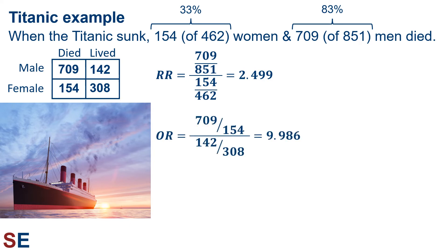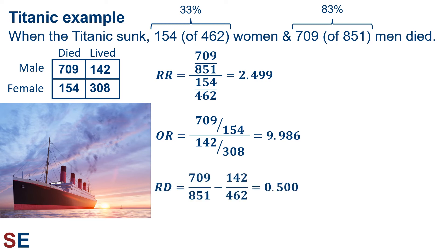The odds ratio is calculated and we get a value of 9.986. It says that the ratio of males to females was almost 10 times higher in the group that died than in the group that lived. This is a nice example of how the odds ratio can mislead us — it does not mean that men were 10 times more likely to die; that value was 2.5. The difference between these two values is so large because the focal outcome was not rare; more than half of all individuals experienced the focal outcome of dying. The risk difference gives a value of 0.500, indicating that the chance of dying for a male on the Titanic was 50% higher than the risk for a female — 83% versus 33%.